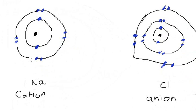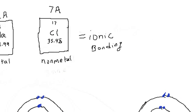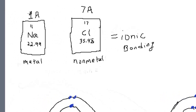Another name for the outer shell is the valence shell. Sodium had one electron in its outer shell, so you say that sodium has one valence electron. This is what the 1A on the periodic table means — sodium has one electron in its outer shell, or one valence electron. Chlorine had seven electrons in its outer shell, and that's what the 7A means: seven electrons in the outer shell.